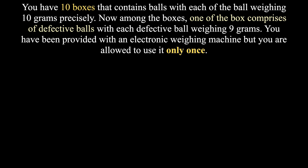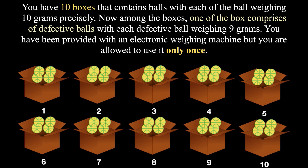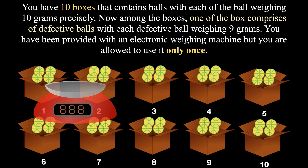You have 10 boxes that contain balls, with each ball weighing 10 grams precisely. Among the boxes, one box comprises defective balls, with each defective ball weighing 9 grams. You have been provided with an electronic weighing machine, but you are allowed to use it only once. Can you find the box with the defective balls? The puzzle looks difficult, but the solution is actually very easy.